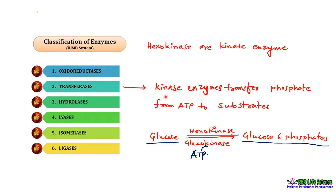Kinase enzymes generally transfer the phosphate group from ATP to the substrate. In the first step of glycolysis, the phosphate group from ATP is transferred to the sixth carbon of glucose by hexokinase and glucokinase enzyme, and glucose-6-phosphate is generated.